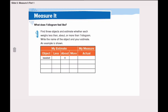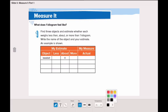Let's do an activity together. We'll find three objects and estimate whether each weighs less than, about, or more than one kilogram. We will write the name of the objects and then we will estimate.